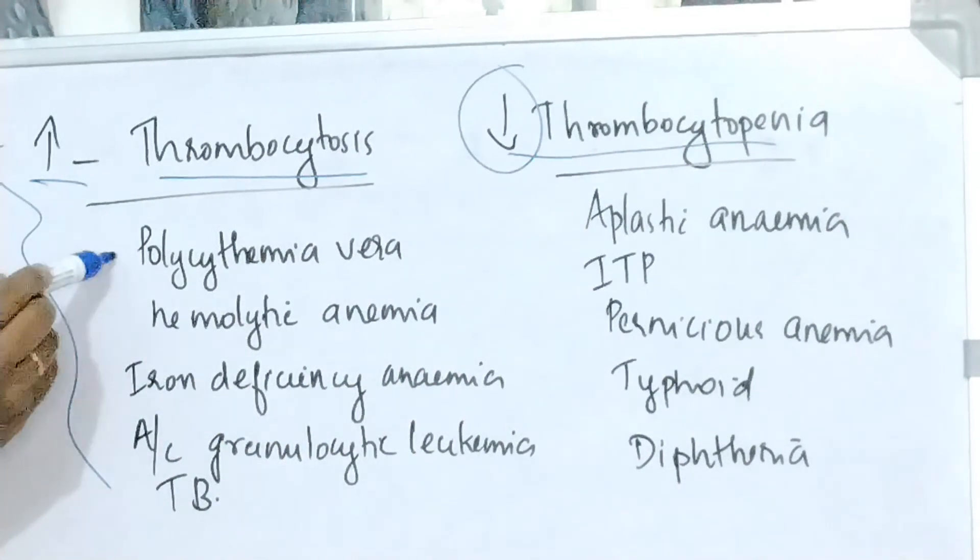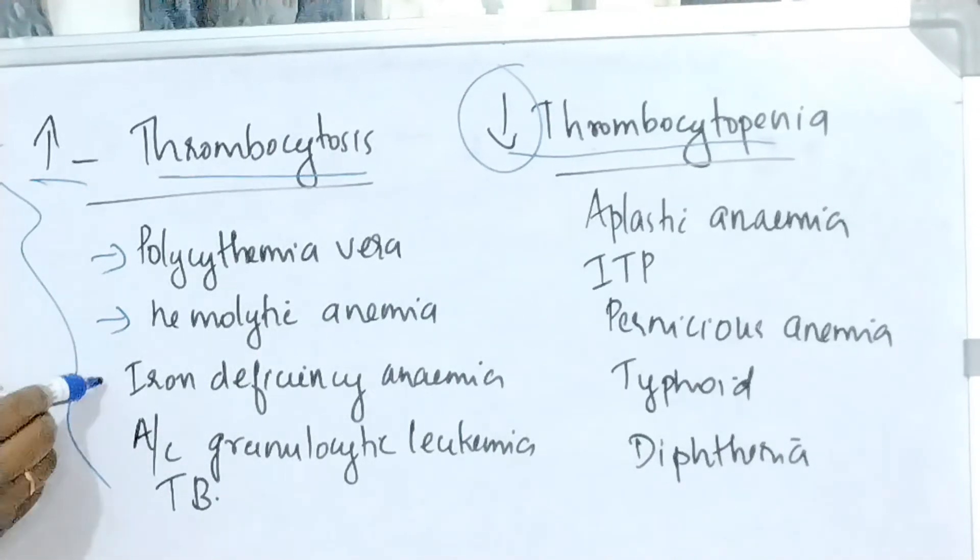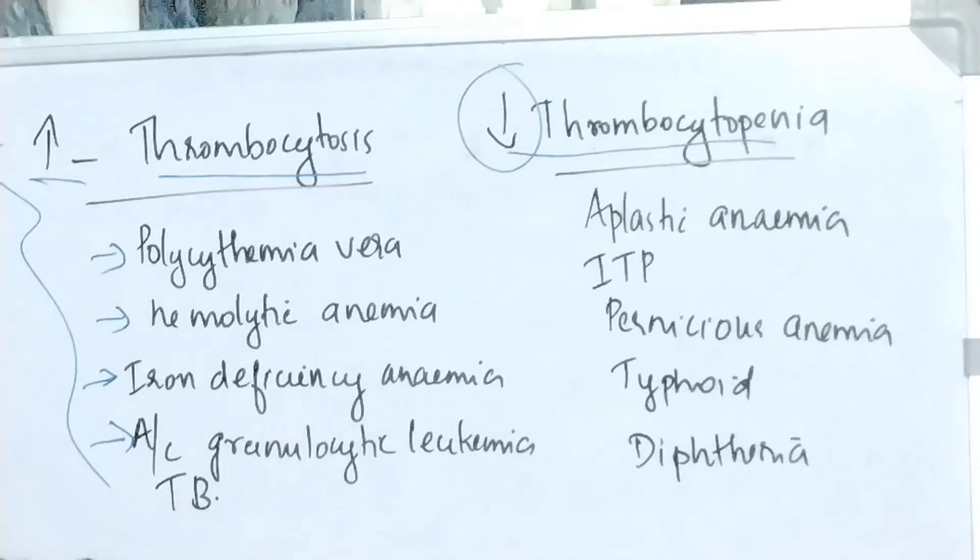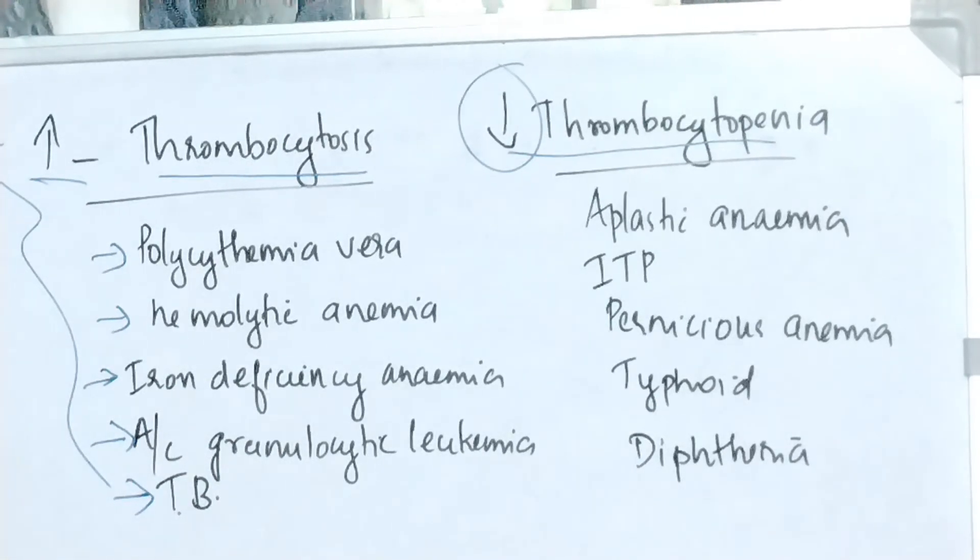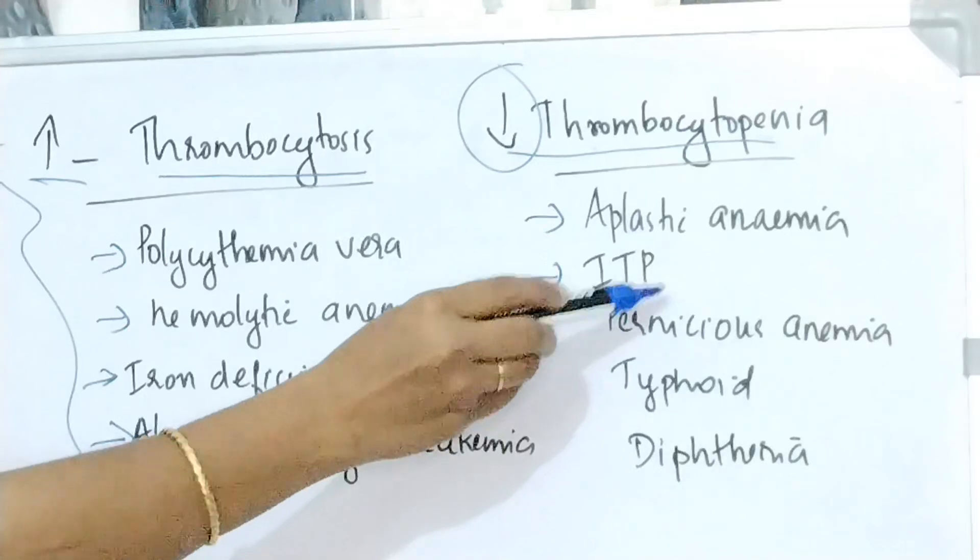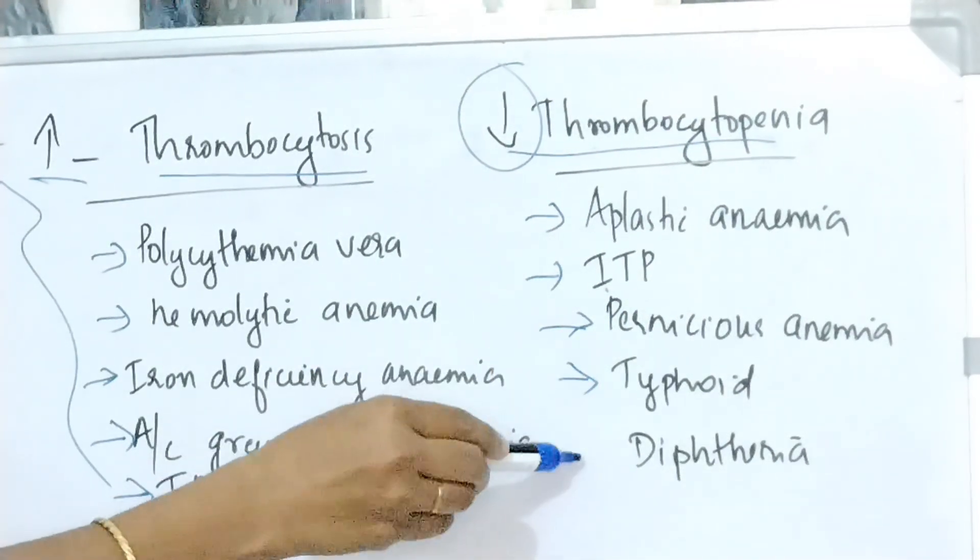And thrombocytosis is seen in polycythemia vera, hemolytic anemia, iron deficiency anemia, acute granulocytic leukemia and in tuberculosis. And thrombocytopenia is seen in aplastic anemia, idiopathic thrombocytopenic purpura, pernicious anemia, typhoid and in diphtheria.